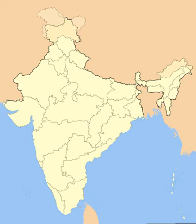India is a federal union comprising 29 states and 7 union territories, for a total of 36 entities. The states and union territories are further subdivided into districts and smaller administrative divisions.